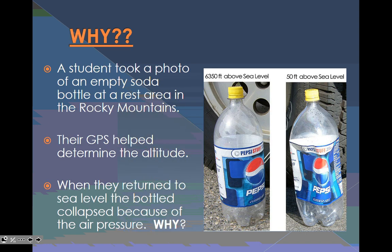So what's going on? A student took a photo of an empty soda bottle at rest area in the Rocky Mountains. Their GPS helped determine the altitude, so they were able to know that at 6,350 feet above sea level, compared that to 50 feet above sea level. So what happened is in here, okay, they were able to retrieve or to capture some air at very high above sea level. As they brought it down at 250 feet above sea level, all of a sudden, the pressure around the air was able to contract this bottle. So that just tells you that air pressure is a thing, and it could be pretty dangerous.